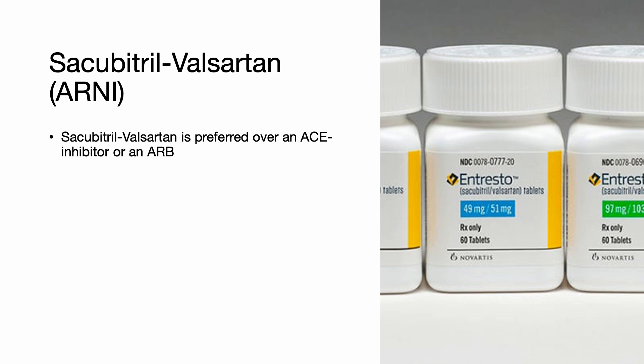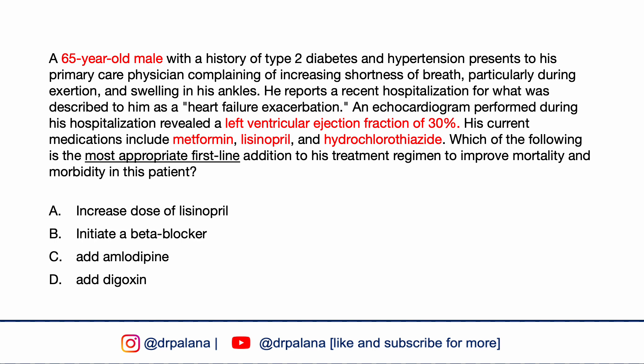A 65-year-old male patient with history of type 2 diabetes and hypertension presents to his primary care physician complaining of increasing shortness of breath particularly during exertion and swelling in his ankles. He reports a recent hospitalization for a heart failure exacerbation. An echocardiogram revealed an LV ejection fraction of 30%. His current medications include metformin, lisinopril, and hydrochlorothiazide. Which of the following is the most appropriate first-line addition to improve mortality and morbidity? A) increased dose of lisinopril, B) initiate a beta blocker, C) amlodipine, or D) add digoxin.